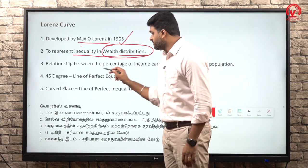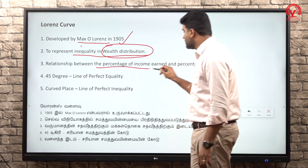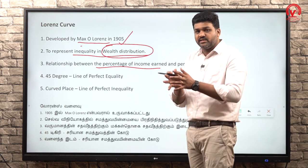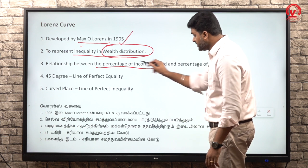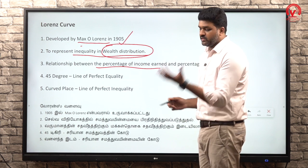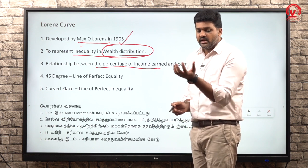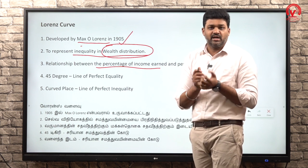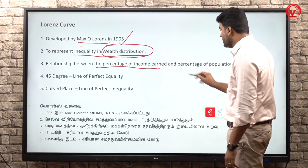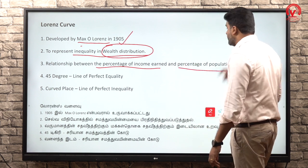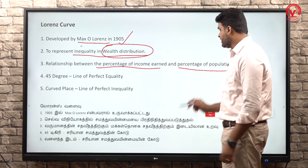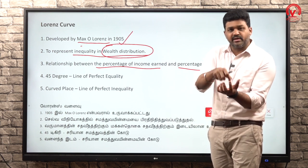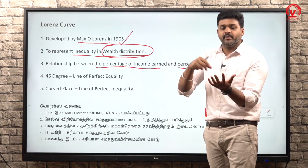Third point: the Lorenz Curve shows the relationship between the percentage of income earned and the percentage of population. The x-axis represents the percentage of population, going up to 100.